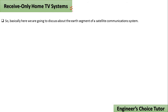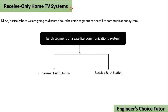The earth segment of a satellite communication system consists of a transmit earth station and a receive earth station. Planned broadcasting directly to home TV receivers takes place in the KU band, at 12 gigahertz frequency. This service is also known as Direct Broadcast Satellite service, or DBS service.